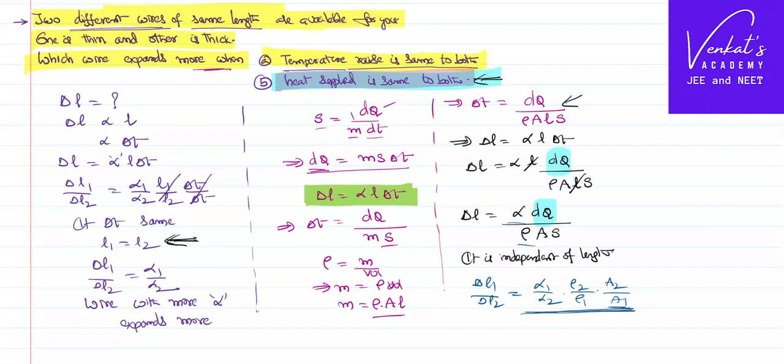Or if somebody say, just for a sake of an explanation, just for a sake of continuation, if somebody say if both wires are made up of same material, then linear expansions will be the same, densities also will be the same.